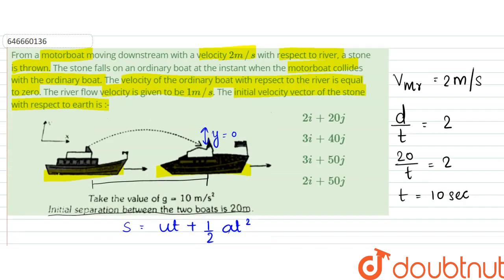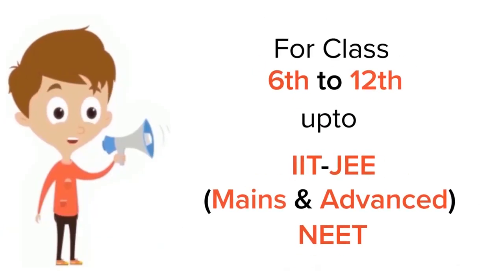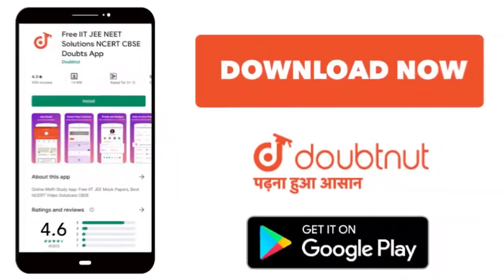So our answer would be 3i plus 50j, that is option C would be the answer. Thank you. For class 6-12, IIT-JEE and NEET level, trusted by more than 5 crore students, download Doubtnet app today.